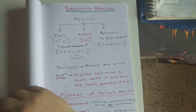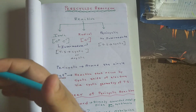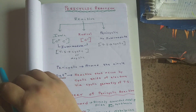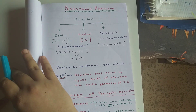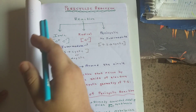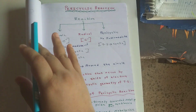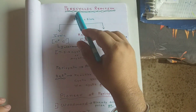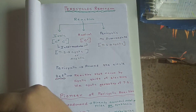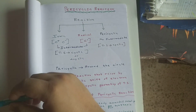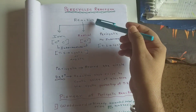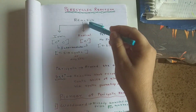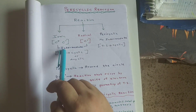If I directly start electrocyclic reactions, there will be problems. You need to get some feeling of pericyclic reactions first, so focus on these first two videos. There are several ways to classify reactions; one way is based on the intermediate formed.